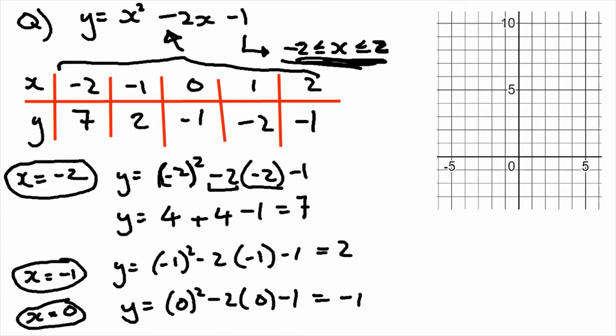And the final bits in our table I should say is minus 2 and minus 1. Unlike with linear graphs there's no real easy way to check, but what we can notice is our values are going down and then going back up again. So we have that kind of shape, that smiley face shape that a quadratic should have.